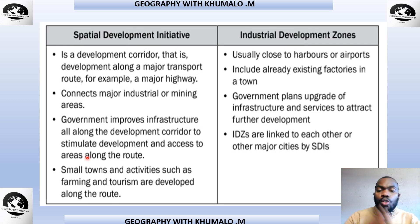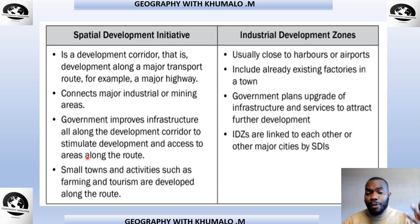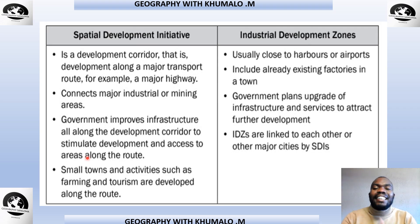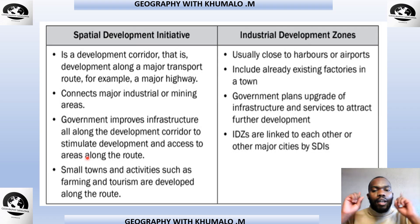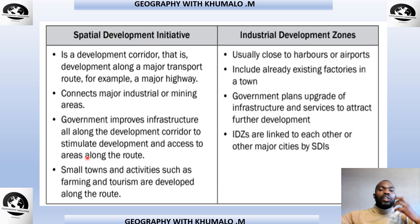Now let's look at the characteristics of an IDZ — Industrial Development Zone. It is usually closer to harbors, where ships export and import goods between countries. It includes already existing features — an area made up of different industries and factories — and government plans to upgrade infrastructure and services to attract further development. IDZs are linked to each other by major corridors or highways, which is the Special Development Initiative.